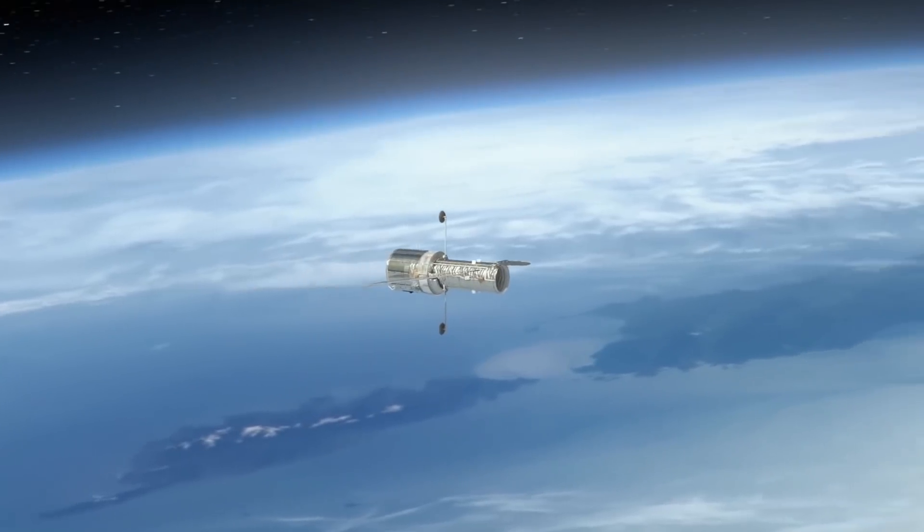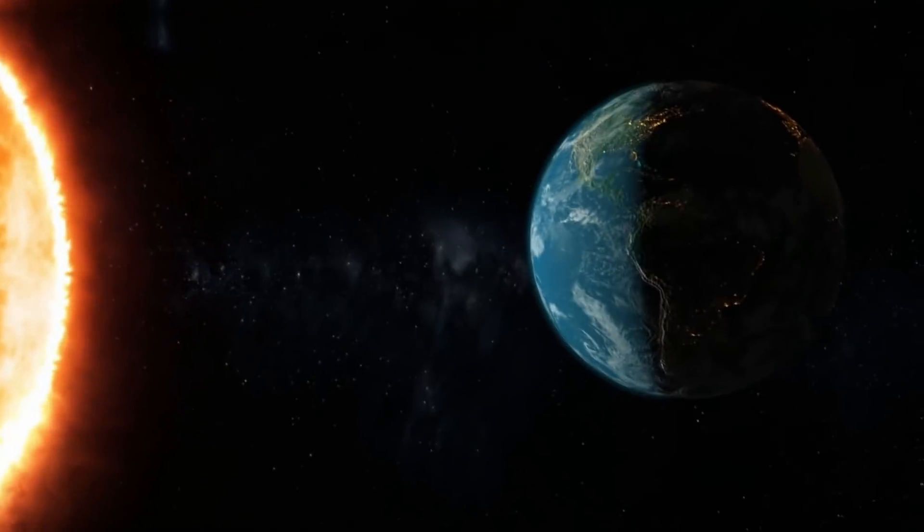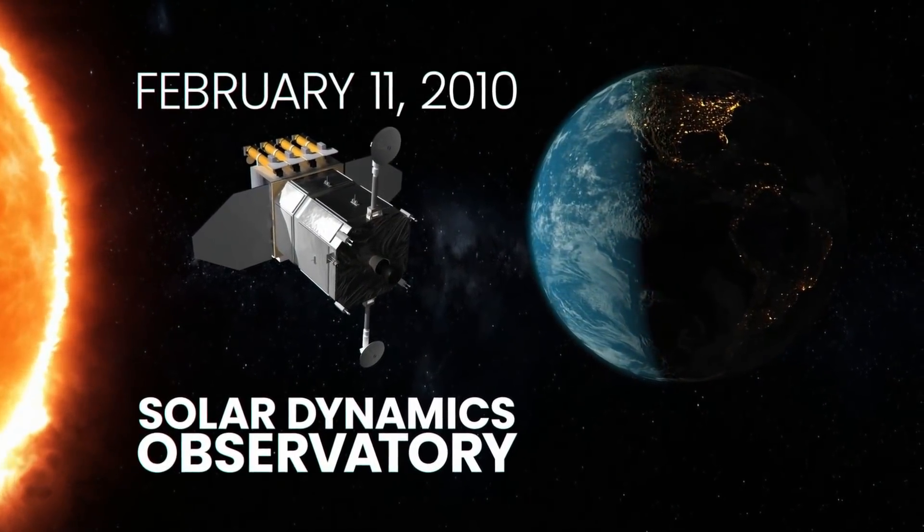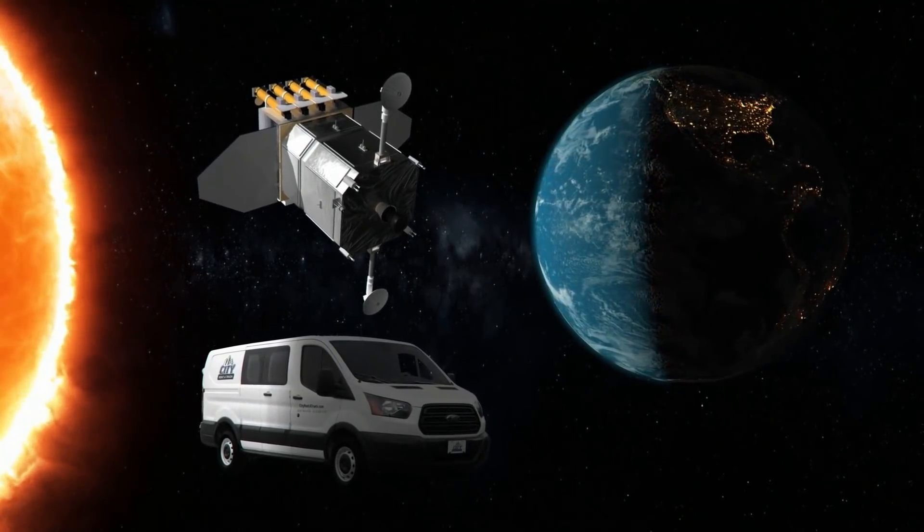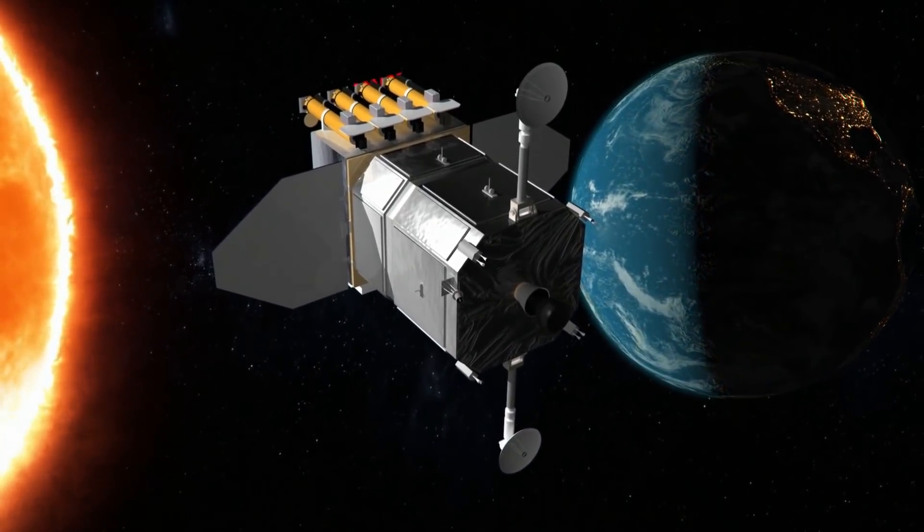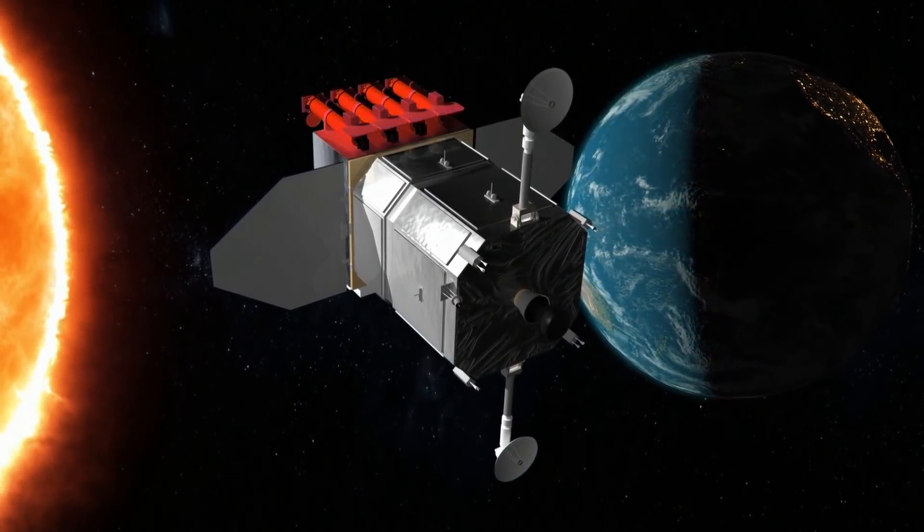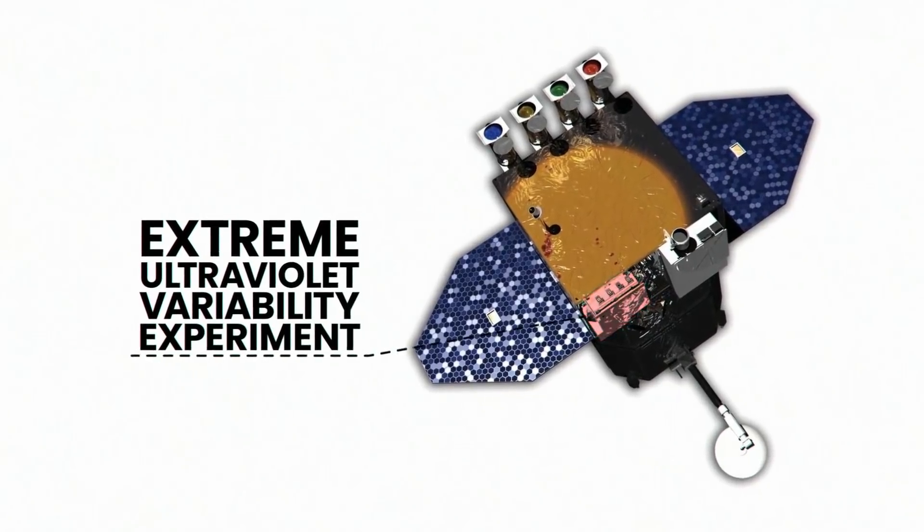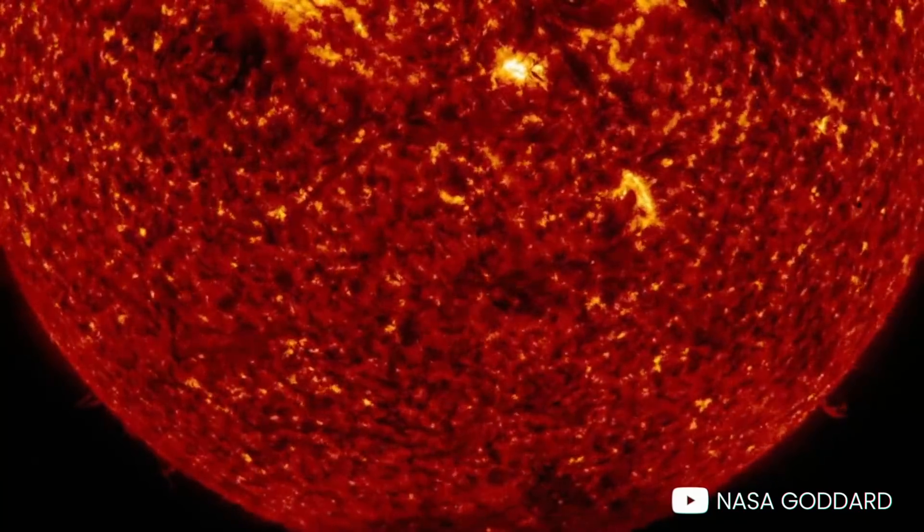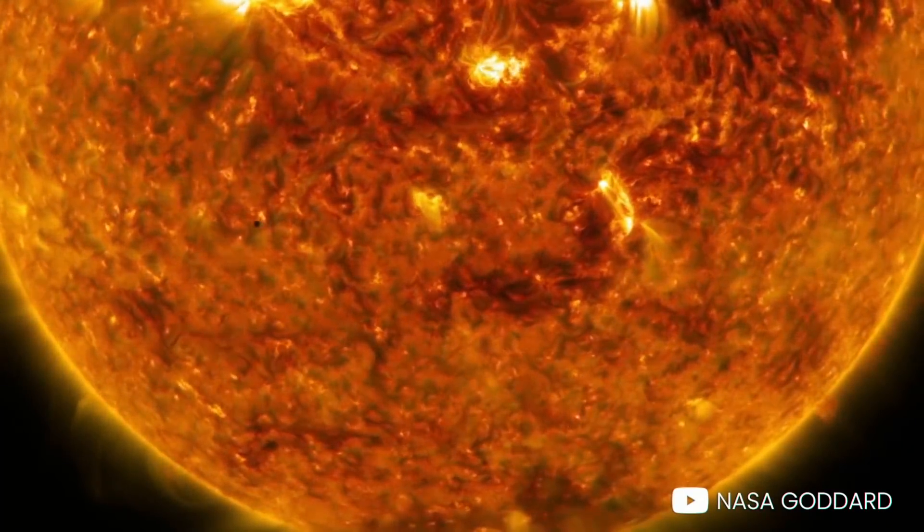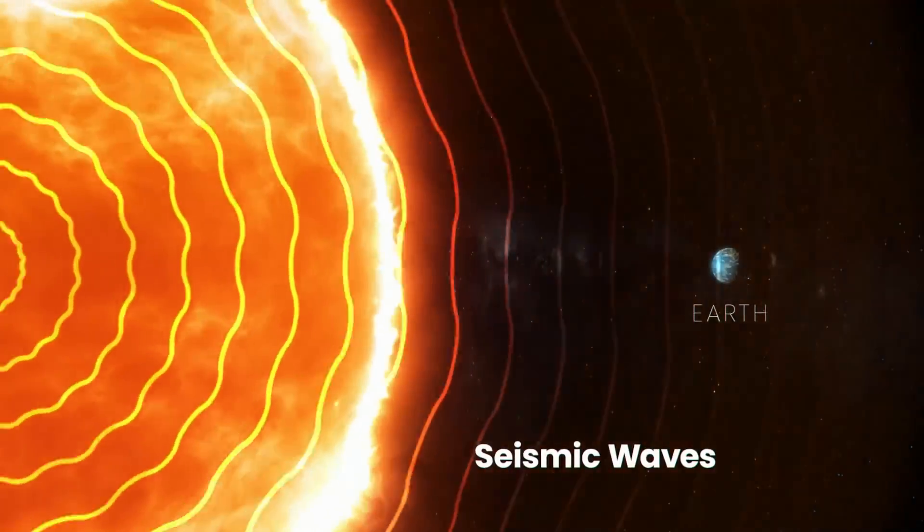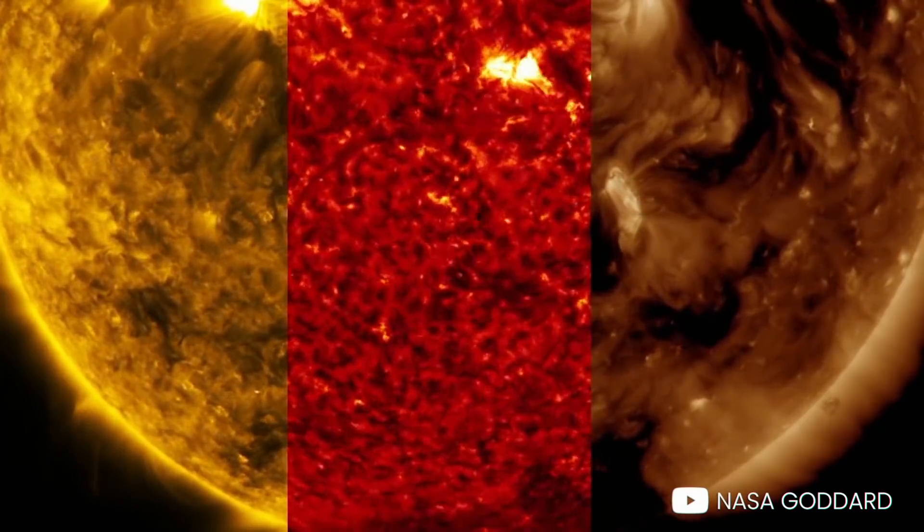But now, there are telescopes out in space that can take even better images. NASA's Solar Dynamics Observatory was launched into geosynchronous orbit above the Earth on February 11, 2010. It's a cargo van-sized piece of equipment that has three main instruments: the Atmospheric Imaging Assembly, which is a battery of four telescopes designed to photograph the Sun's surface and atmosphere; the Extreme Ultraviolet Variability Experiment that measures the Sun's ultraviolet output; and the Helioseismic and Magnetic Imager, which can map solar magnetic fields and look below the Sun's opaque surface using a technique called helioseismology, studying the Sun by listening to it and observing vibrations on its surface.